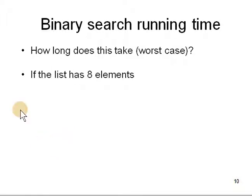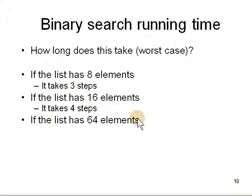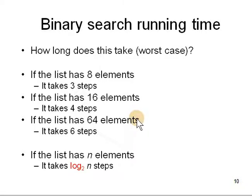Suppose, let's look at an example. It has 8 elements in the list. First time it takes 3 steps. And if you have 16 elements it takes 4 steps. 64 it takes 6 steps. N elements, log 2 n.